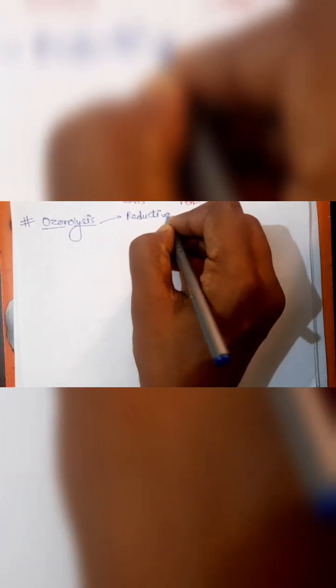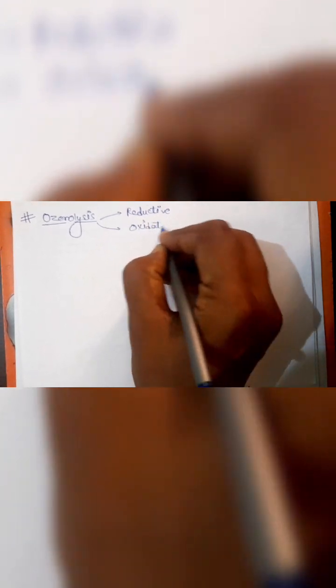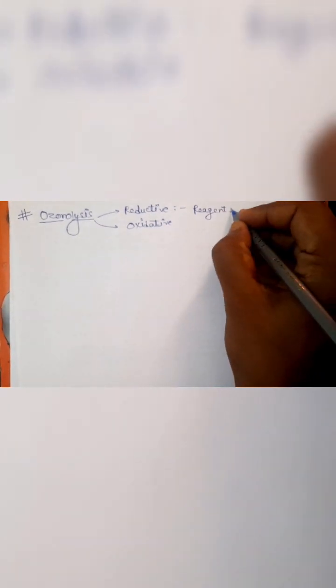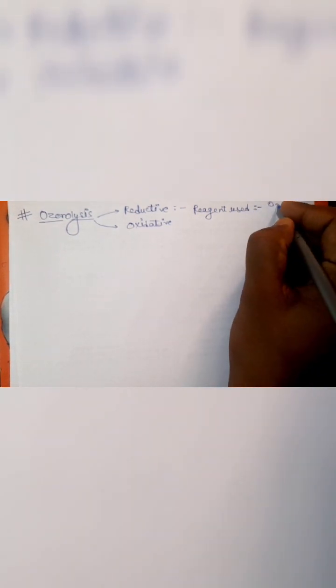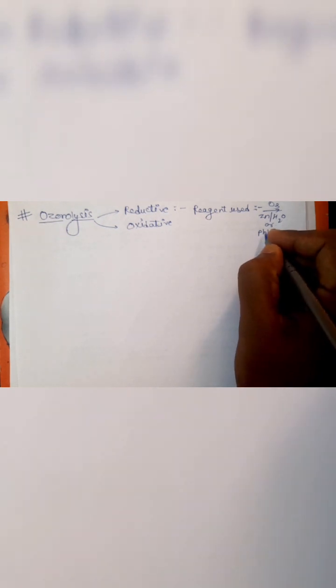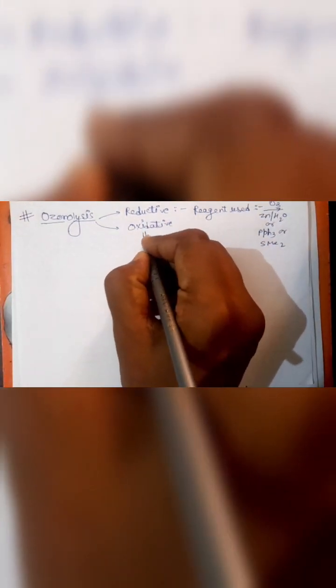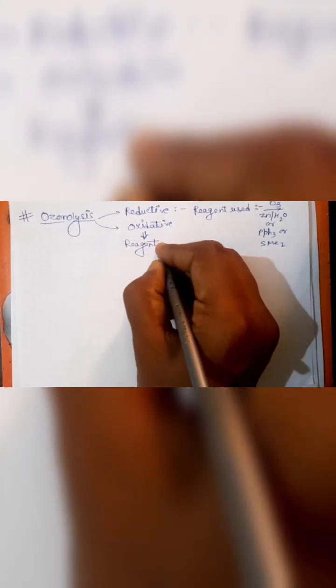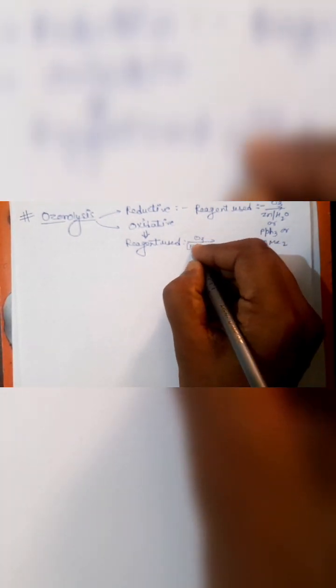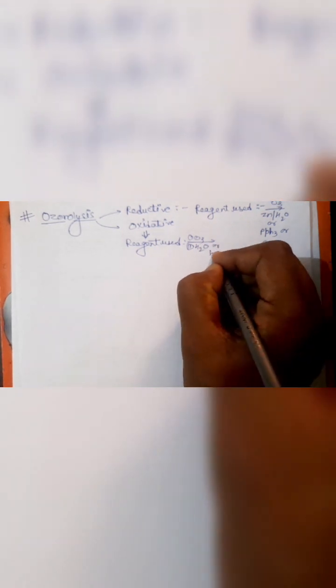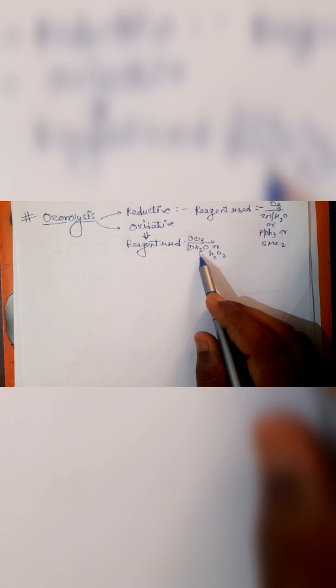Today we are going to learn both types of ozonolysis. First is reductive and second is oxidative. In reductive ozonolysis, the reagent used is O3 and Zn/H2O, or it can be PbS, or SMe2. The reagent used in oxidative ozonolysis is O3 and second reagent is H2O2, peroxides, or water.